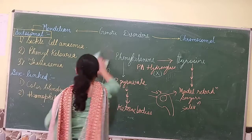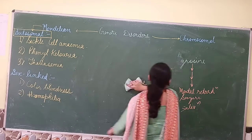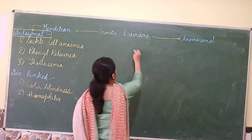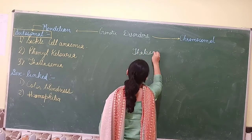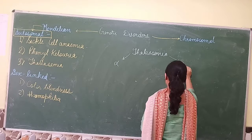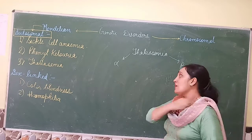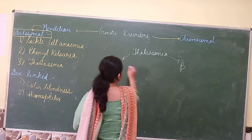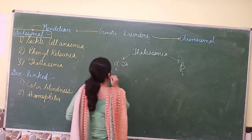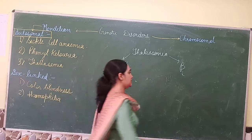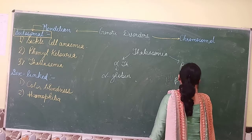Next is thalassemia. Thalassemia is of two types: alpha thalassemia and beta thalassemia. Depending on which chain is affected, it is characterized as alpha or beta thalassemia. There are two chains responsible for the synthesis of hemoglobin. In alpha thalassemia, the alpha chain synthesis is disturbed; in beta thalassemia, the beta chain synthesis is disturbed.